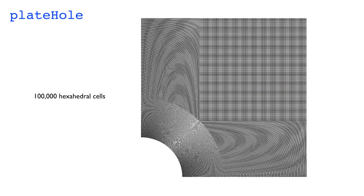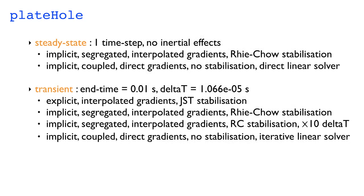I've increased the density of the mesh, it's a much finer mesh, so there's 100,000 cells. I'm going to take two particular forms of the case. One is going to be steady state, and I'm going to take one time step, no inertial effects. I'm going to look at the two implicit approaches, segregated and coupled, to see how they compare. And then I'm going to, in the second case, look at a transient form, where I change the end time to 0.01 seconds. With this time step, a small time step, I'm going to compare the explicit and implicit approaches. Also, I'm going to compare the implicit and segregated approach using a larger time step.